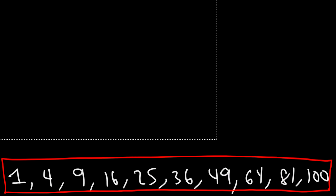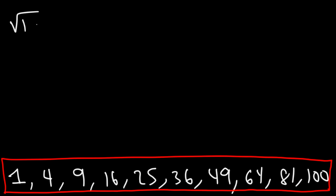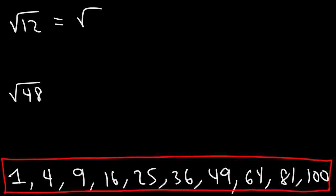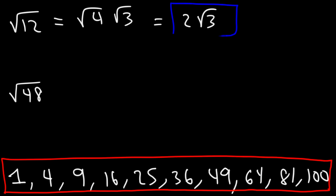Let's work on some more practice problems: the square root of 12 and the square root of 48. Feel free to pause the video. The highest perfect square that goes into 12 is 4, so we write 12 as 4 times 3. The square root of 4 is 2, giving us 2√3.